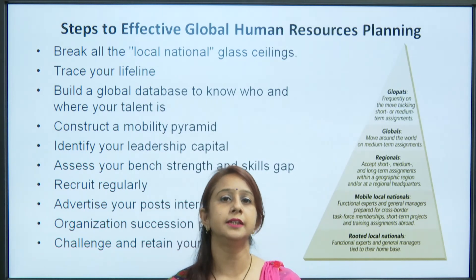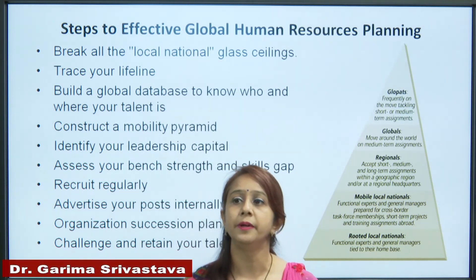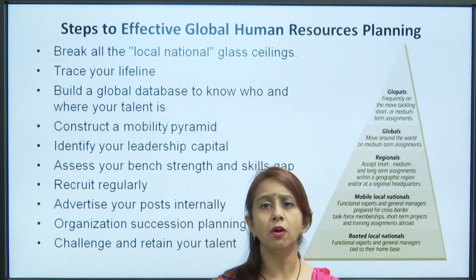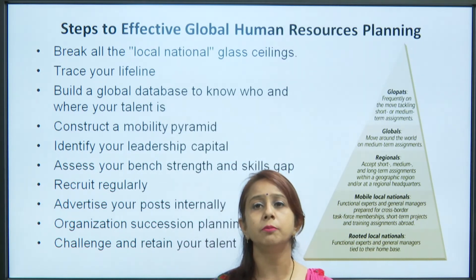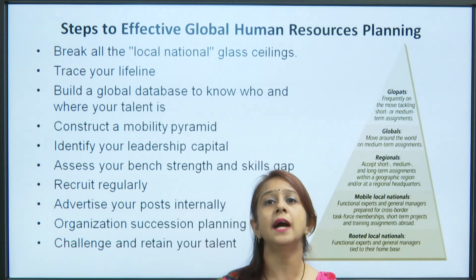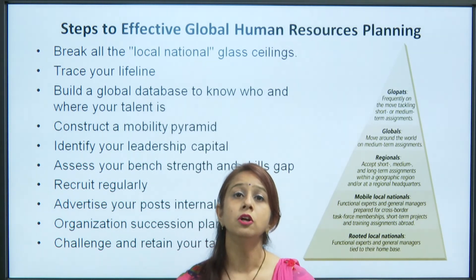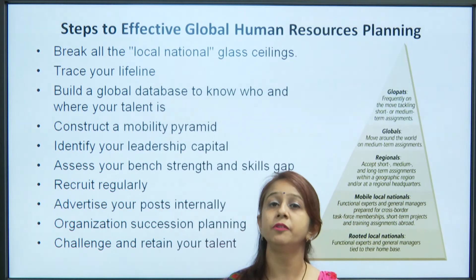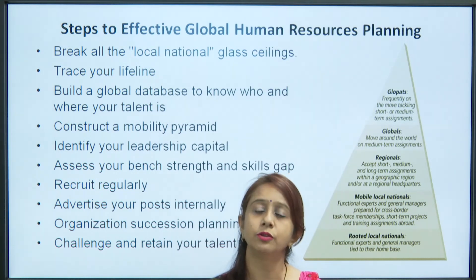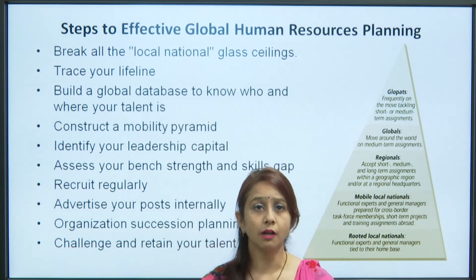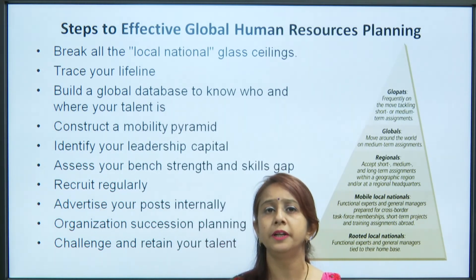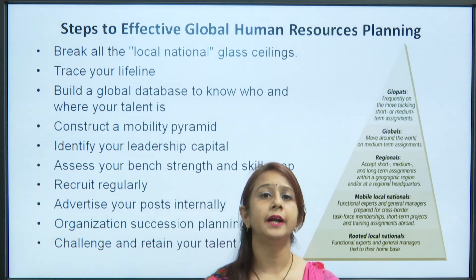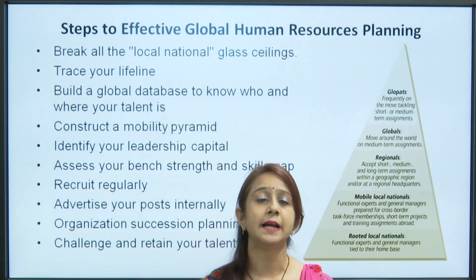At the top of the mobility pyramid are globats, or expatriates, who are frequently on the move, taking short and long-term assignments — these are the people who will work for you on overseas assignments. You need to identify the globats available internally within the organization or externally. Once the mobility pyramid is constructed, you can identify your leadership capital — the people who are always ready to take overseas assignments.